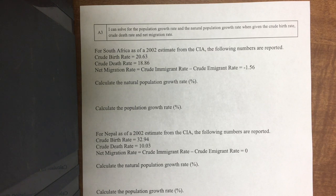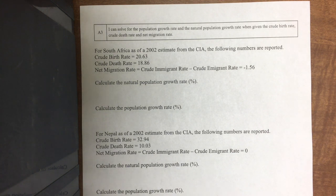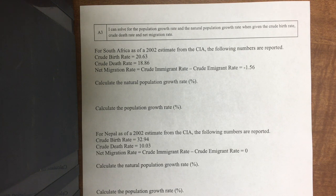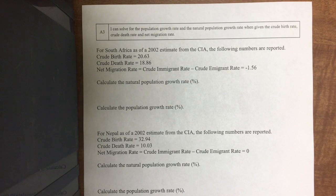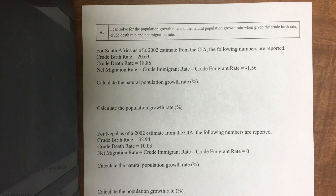This part of the video covers how to find population growth rate when given crude birth rate, crude death rate, and net migration rate. You can also find doubling time from this. Natural population growth rate simply means births minus deaths, remembering that crude means out of a thousand.